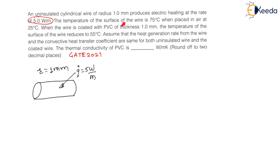The temperature of surface of wire is 75 degree Celsius when placed in air at 25 degrees Celsius. So, temperature of surface of wire is T1, and T1 is given as 75 degrees Celsius. It is placed in air at 25 degrees Celsius. Therefore, surrounding fluid temperature T-infinity is 25 degrees Celsius.